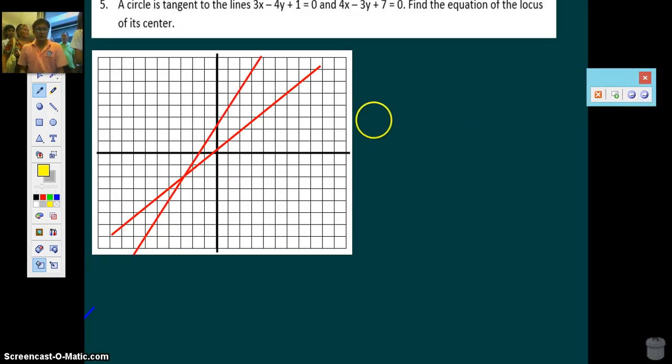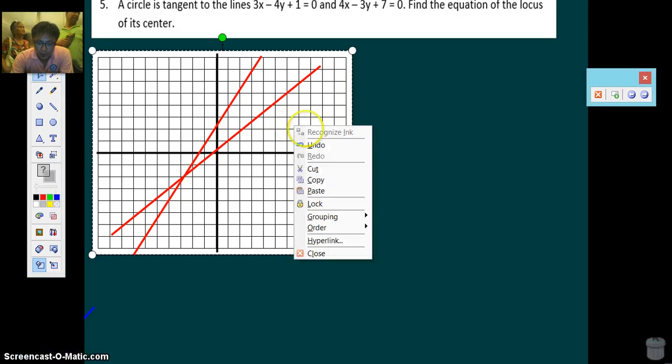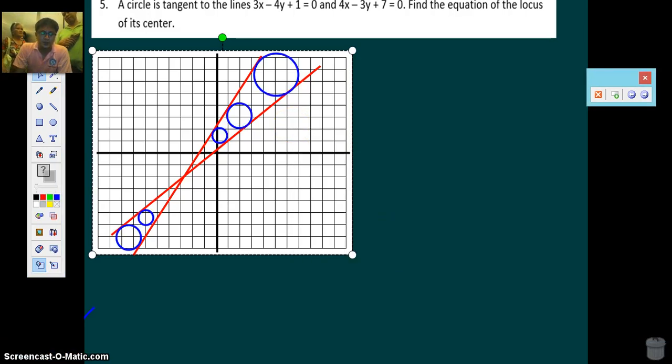Now, problem number 5. Circle is tangent to the lines 3x minus 4y plus 1 equals 0, and 4x minus 3y plus 7 equals 0. Find the equation of the locus of its center. So we're given two tangent lines. Now, there are many circles that will satisfy this condition. So I drew some. I drew 5 of them.